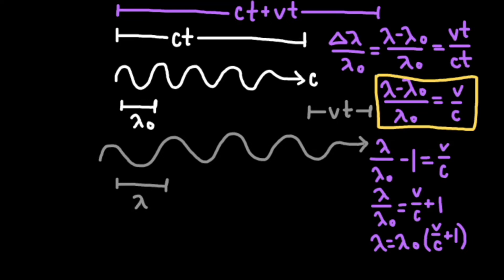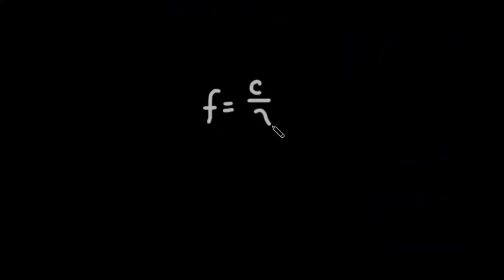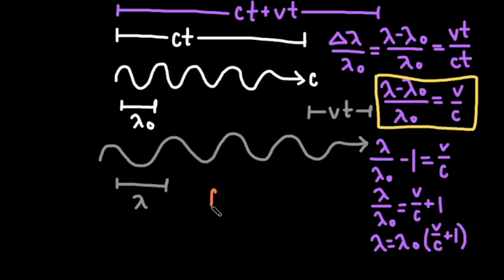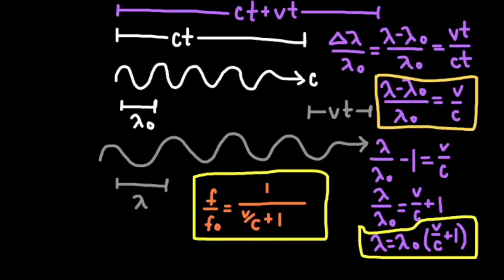In the earlier sections of this video, I talked about the Doppler effect primarily in terms of frequency, so here's an easy trick to switch from talking about wavelength to frequency. Since frequency is inversely proportional to wavelength, all we have to do to put our equation in terms of frequency is take the inverse. Now we have two more equations to describe the Doppler effect, but remember, they all stem from the same math, so you should be able to easily get from one to the other.